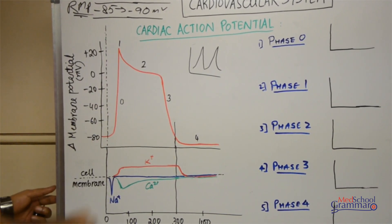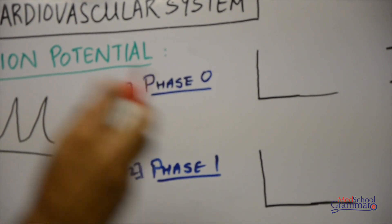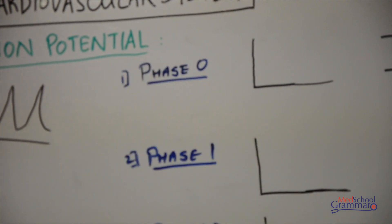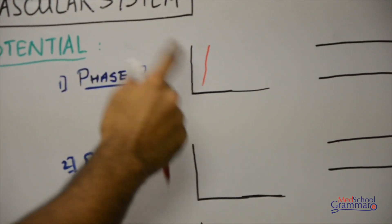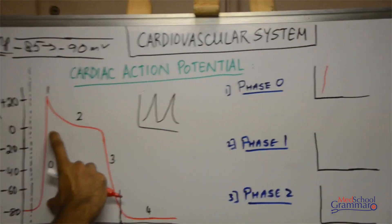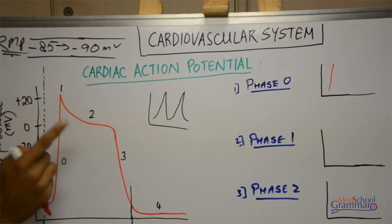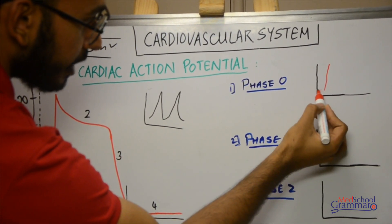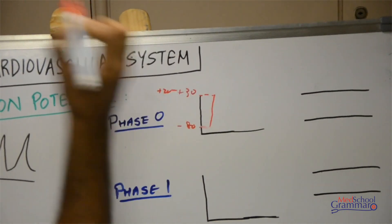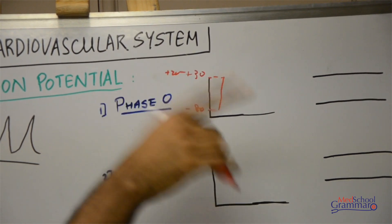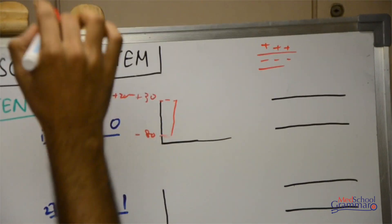Phase 0 is also known as the phase of rapid depolarization. The cardiac muscle is resting at the resting membrane potential, and phase 0 represents a rapid depolarization — a rapid upstroke. The potential rises from the resting membrane potential of about minus 80 millivolts to a value of about plus 20 to plus 30 millivolts. Now, what is the ionic basis of this phase 0?